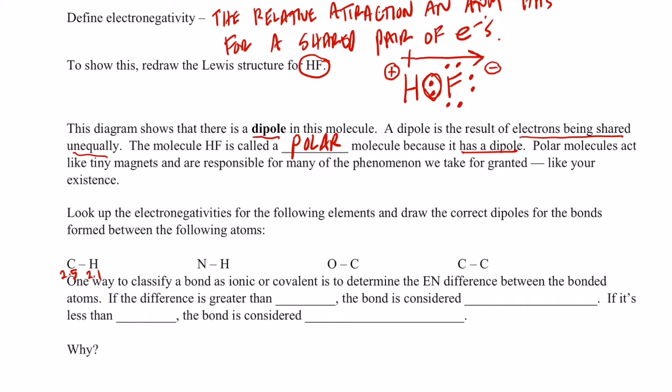So 2.5 for carbon and 2.1 for hydrogen. So if I were to draw a dipole, I would draw my arrow facing the more electronegative element with a plus sign over the more electropositive element. So it would look like that.